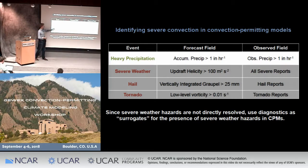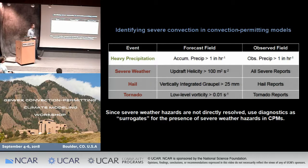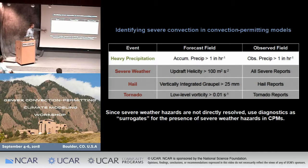For the hail field, traditionally what's used is vertically integrated graupel, or sometimes hail models within the convection-permitting simulations. For tornadoes, what might be useful is some metric of low-level vorticity. When we have forecasts based on those fields, we can compare them to observed fields of severe reports provided by NOAA. I'll generally refer to these fields as surrogates for the presence of severe weather hazards.